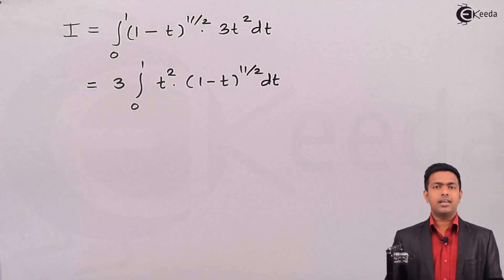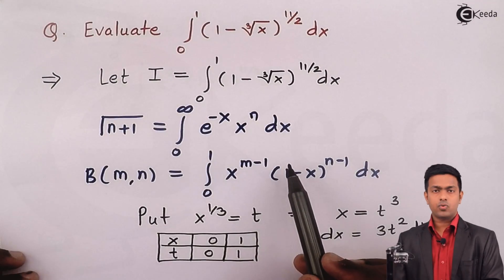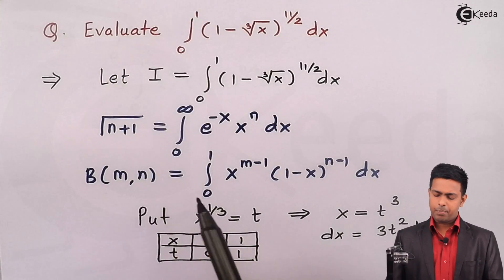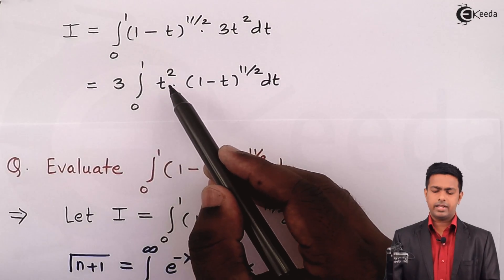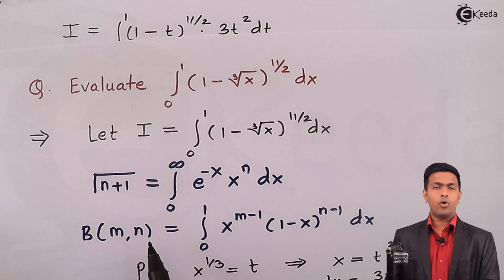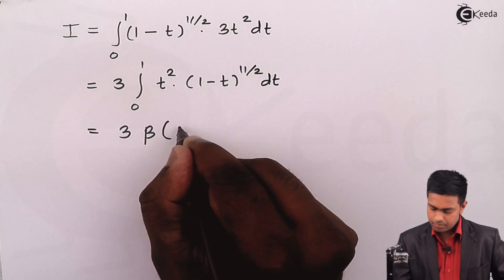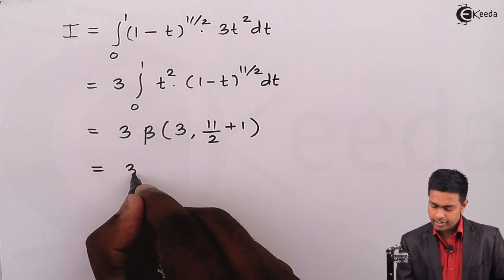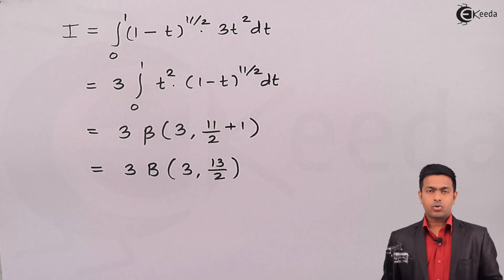This whole integral is matching with the definition of beta function. In the definition we have x^(m−1) and (1−x)^(n−1), meaning m and n are each one greater than the respective powers. So whatever is the power of t, I just add 1 to get m. Since the power of t is 2, m = 3. And since the power of (1−t) is 11/2, n = 11/2 + 1 = 13/2. So this equals 3 · β(3, 13/2).